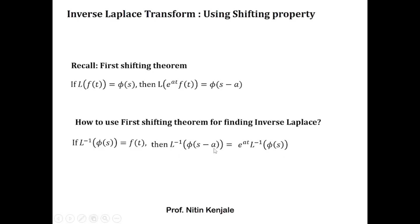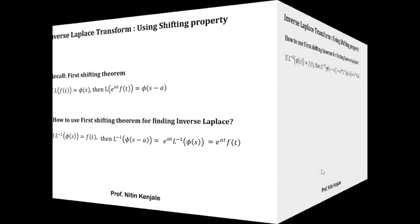So we have: L⁻¹{φ(s − a)} = e^(at) · L⁻¹{φ(s)}. But we know L⁻¹{φ(s)} is f(t), so we can simply replace this by f(t) to get e^(at) · f(t). Now we see an example on this.